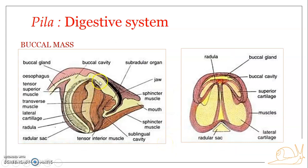The radula is moved forward and backward over the odontophore, which is supported by cartilaginous structures. This back-and-forth movement helps in rasping food particles, brought about by protractor and retractor muscles. Regular use causes wearing off of the anterior end. To compensate for this loss, the radula sac's epithelial lining continuously adds new radula material from the posterior end, maintaining the radula's size.